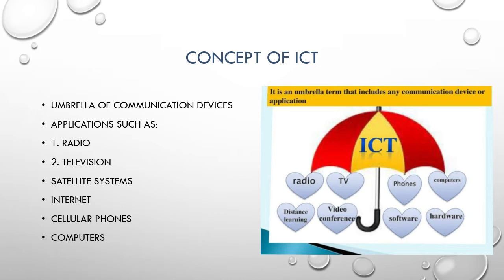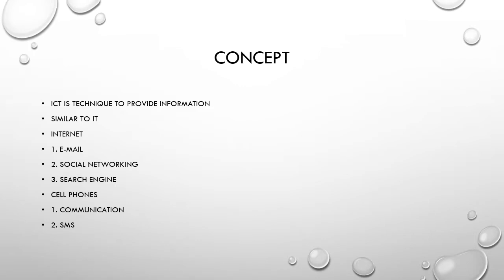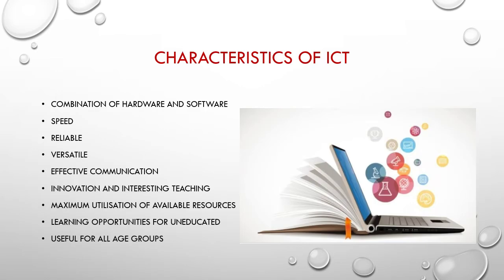IT is Information Technology, and the main focus of ICT is that you can disseminate information. The internet and cell phones are the best examples of ICT. Internet provides facilities such as email, social networking websites, and various search engines. Cell phones are widely famous among people of all ages and have become a basic need for everyone.